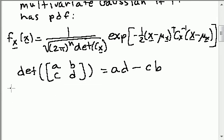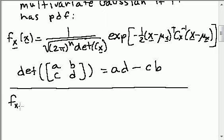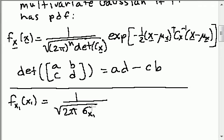Now compare this to the pdf of a single Gaussian random variable, say x1. That was 1 divided by the square root of 2π times σ x1 squared, and then we multiply that by e to the minus x minus its mean, x1 minus its mean squared, divided by 2 times the variance.